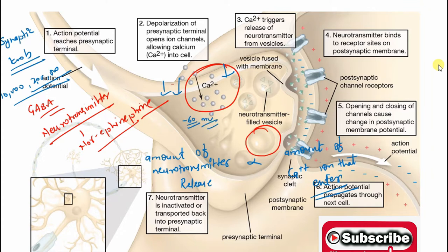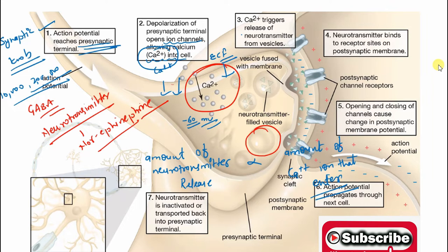Let's summarize the whole process. Step one: the action potential reaches the pre-synaptic terminal — the wave of depolarization travels along the axon to the axon terminal region. Step two: there is depolarization of the pre-synaptic terminal, which opens voltage-gated calcium ion channels. The calcium concentration is much higher in the extracellular fluid, so upon opening, calcium influx occurs. This calcium influx determines how much neurotransmitter is released.